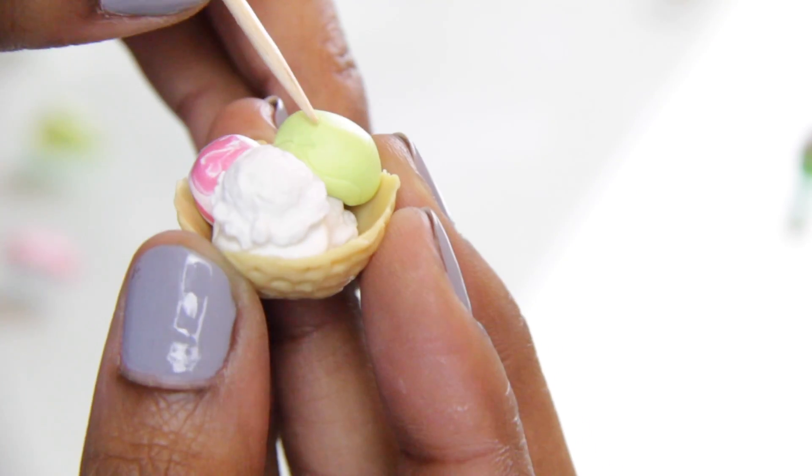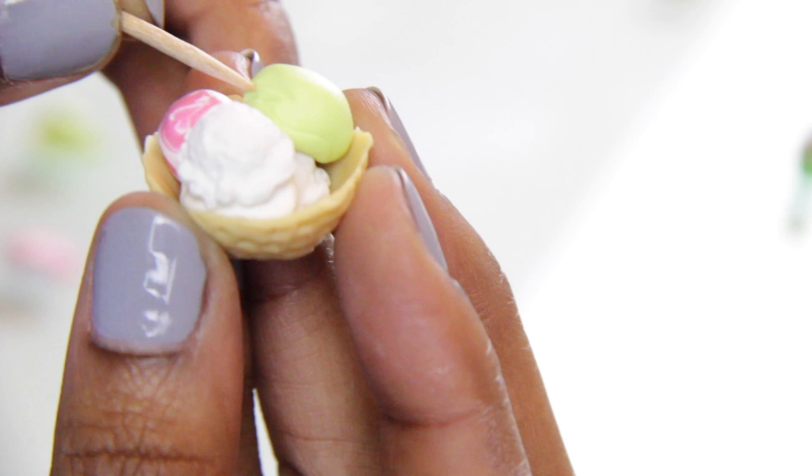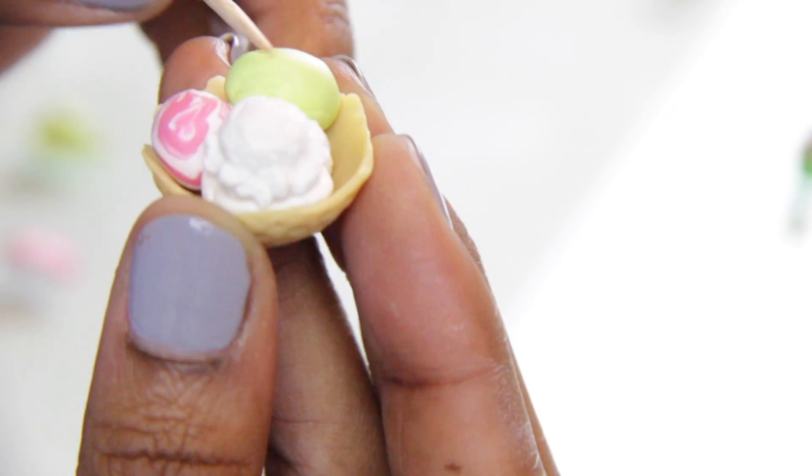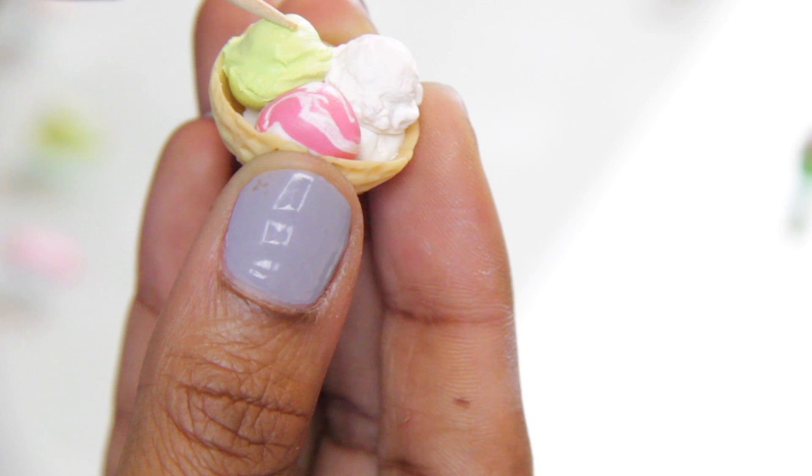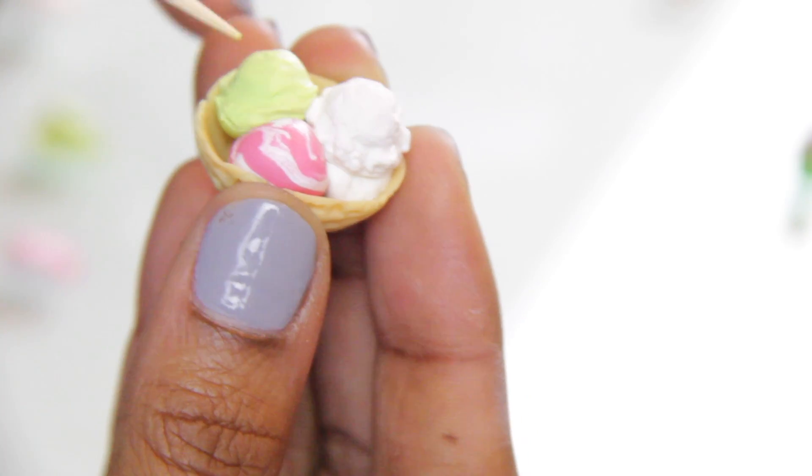I put extra clay in the bottom to hold all of it together and then later I'm going to add some banana slices but you can also add strawberry or orange or any of the fruit canes that come in the box.